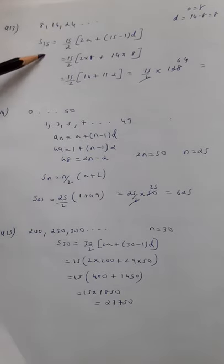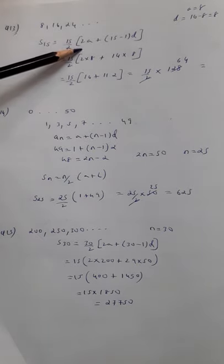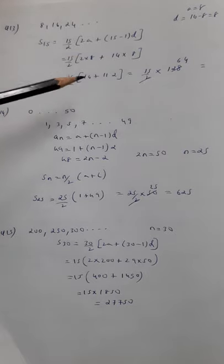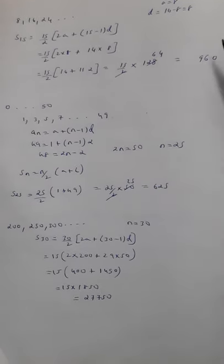So I am using this formula: n by 2 times (2a plus n minus 1 times d). n value I am putting as 15, a value is 8, and d value is also 8. So I am solving that and I am going to get the answer here: 960.